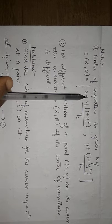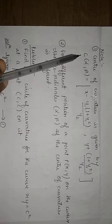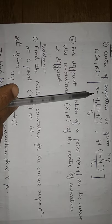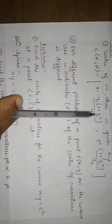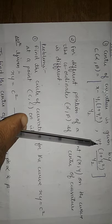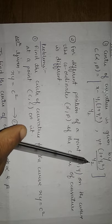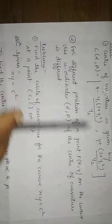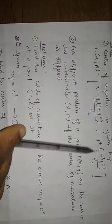Now to find the center of curvature, there is a formula. Alpha equals x minus y₁ times (1 plus y₁²) divided by y₂, and beta equals y plus (1 plus y₁²) divided by y₂. So we need to compute alpha and beta; these consolidated coordinates give the center of curvature.